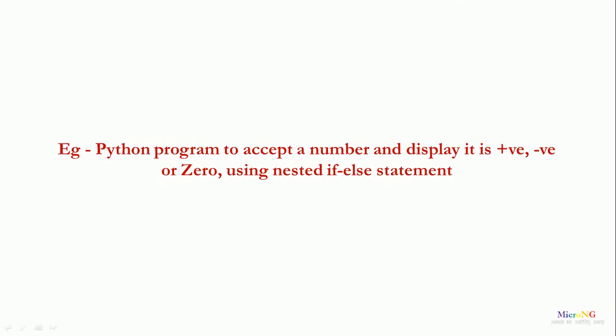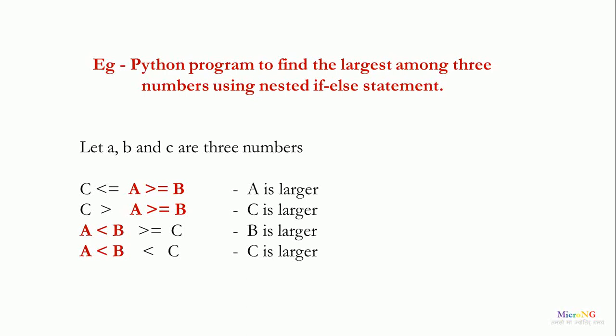Let us see another Python program to find the largest among three numbers using a nested if-else statement. Consider three numbers A, B, and C. First we check the condition that A is greater than or equal to B. If this condition is true, then A is greater than B. We then check the second condition: whether A is greater than C. If A is greater than both B and C, then A is the largest number.